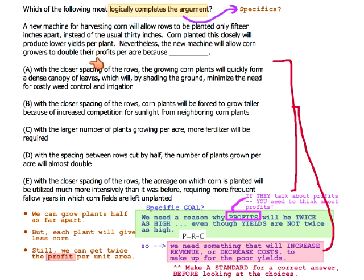A says that when you put the rows closer together like that, you will spend less on these things that cost stuff. That's good — that's what we want.